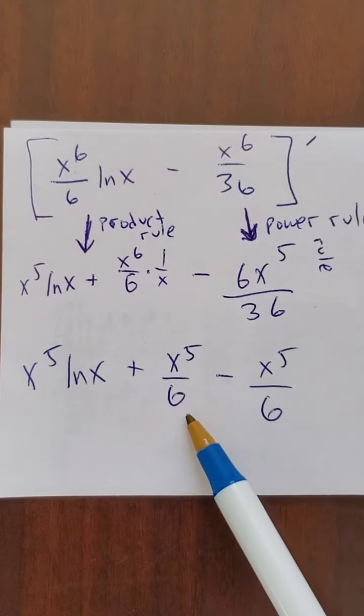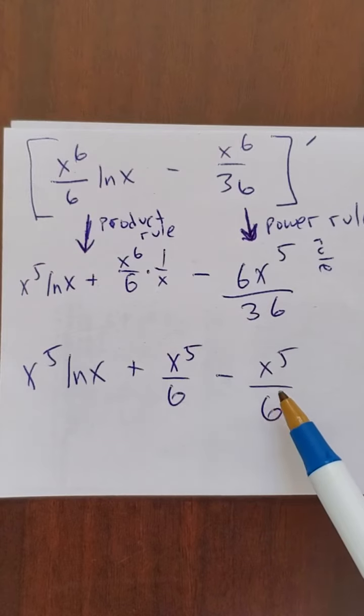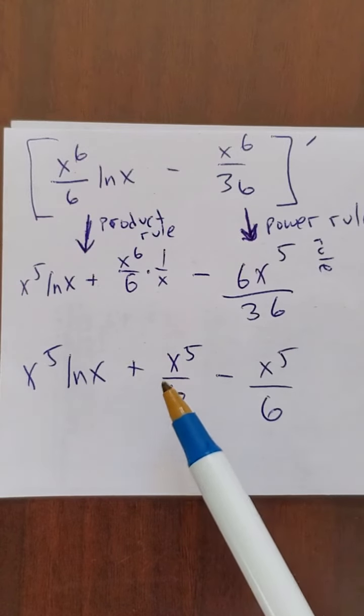This here reduces to x to the 6th over 6. This reduces to, I'm sorry, x to the 5th over 6.